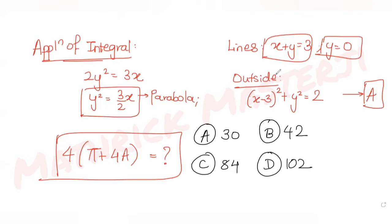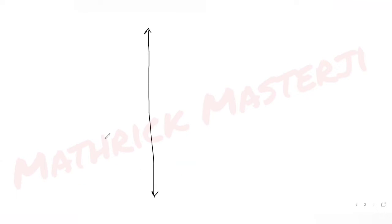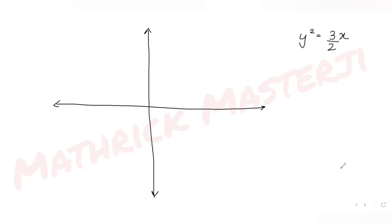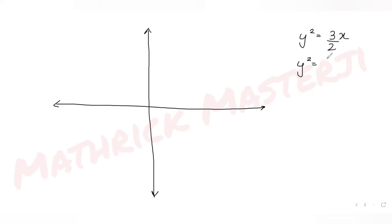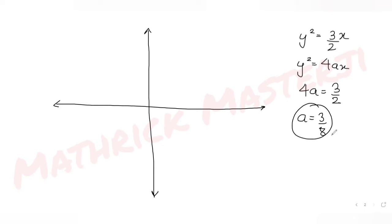Let's plot all the curves first to figure out the area. The parabola equation is y² = (3/2)x. Comparing with the standard form y² = 4ax, we get 4a = 3/2, so a = 3/8.